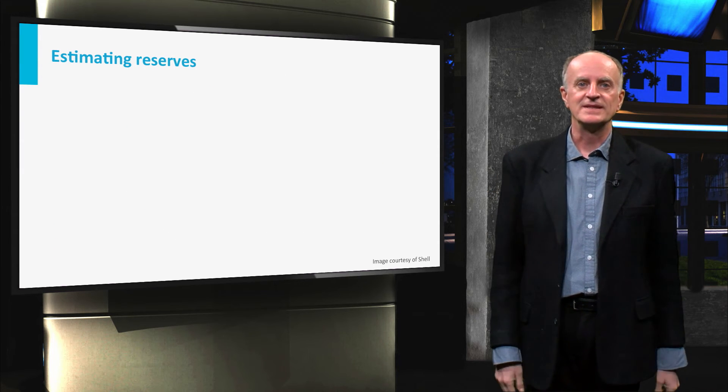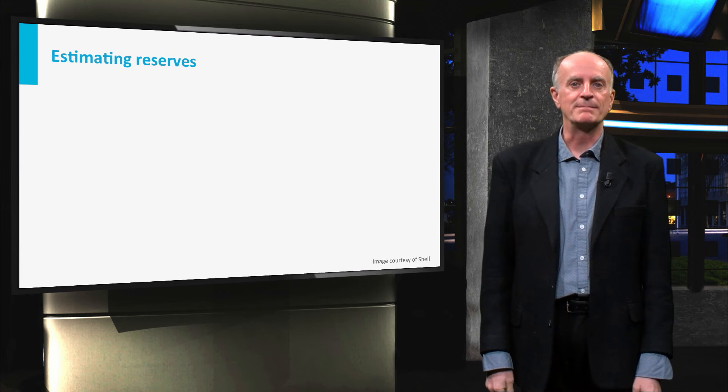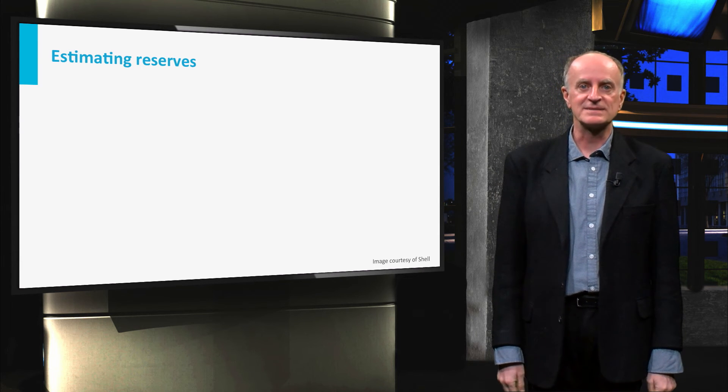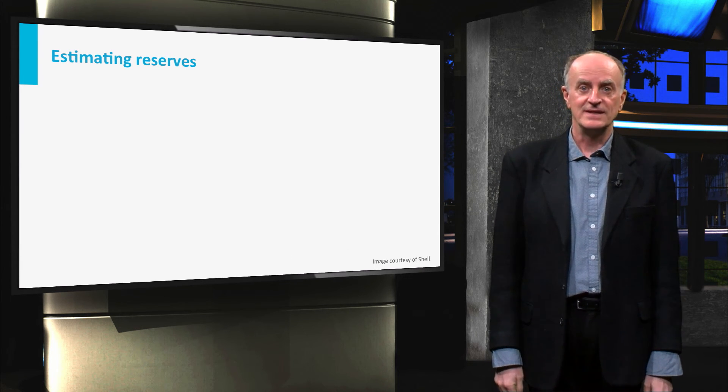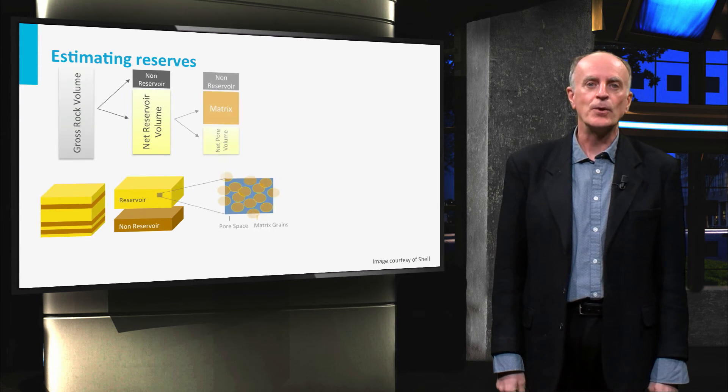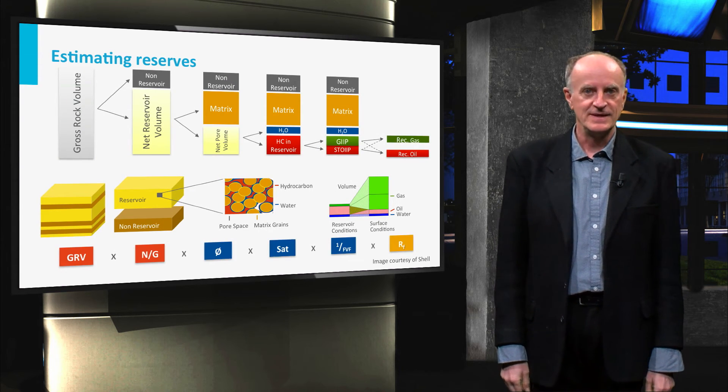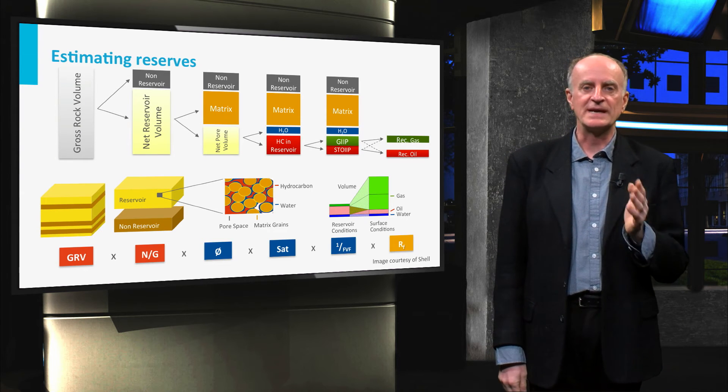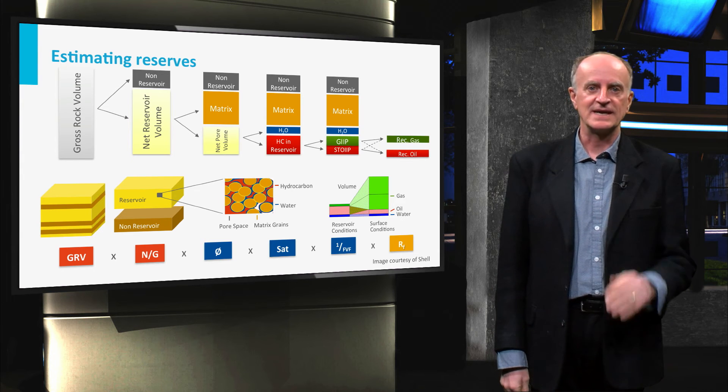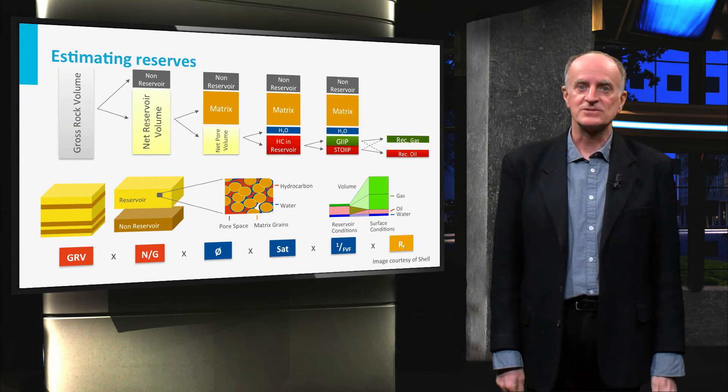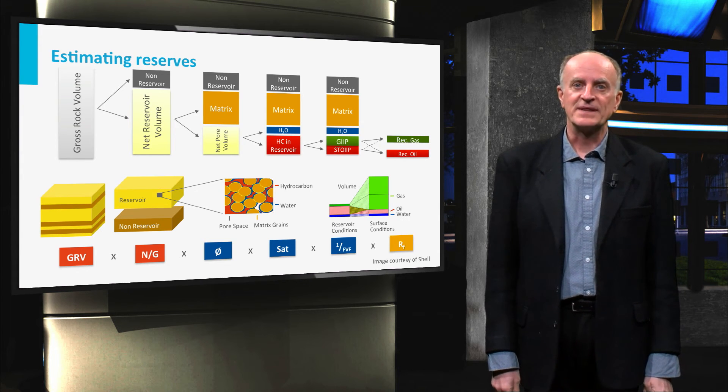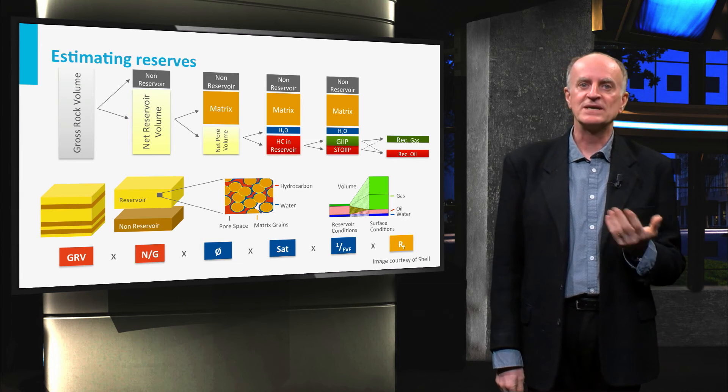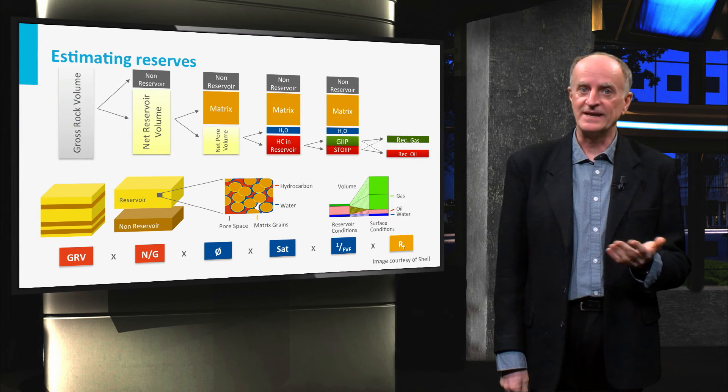At this stage, the team is ready to estimate the amount of oil and or gas present in the reservoir. This is called the Stock Tank Oil in Place. This number corresponds to the volume of the reservoir, corrected for a number of factors shown in the slide. STOIP is obviously an important number, but the key question is how much of this can be recovered and at what costs.